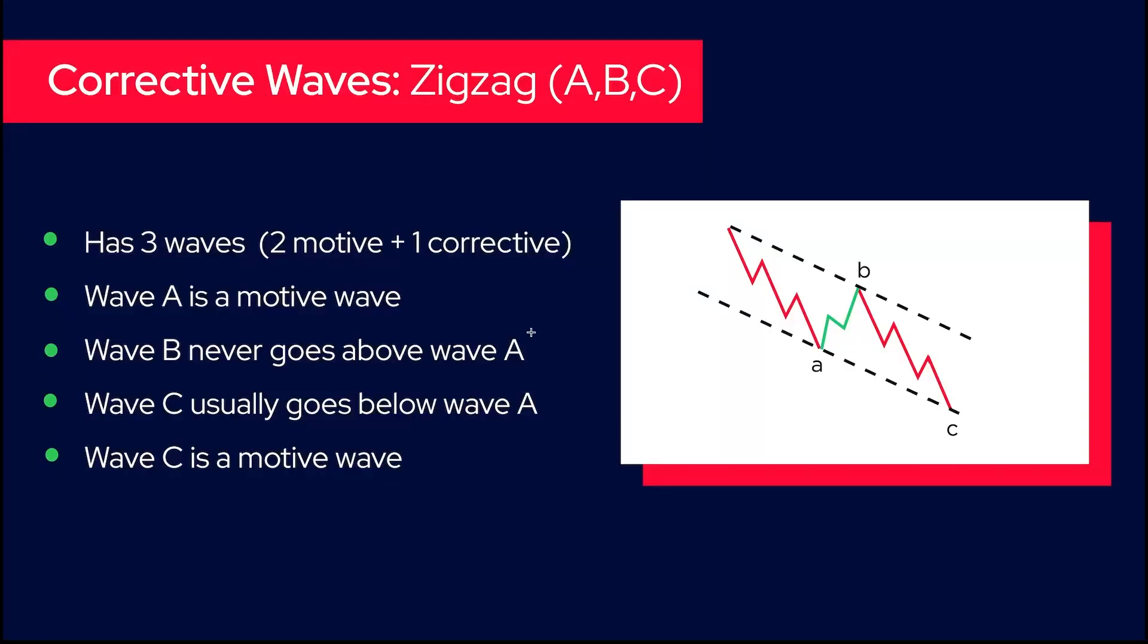Now let's go to the corrective waves. As the impulse is the most iconic pattern of the motive waves, the zigzag labeled ABC is the most iconic pattern of the corrective waves. Let's go through the five rules of a zigzag. ABC - three waves, two motive waves.